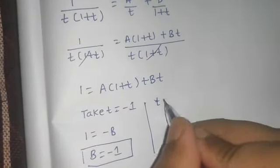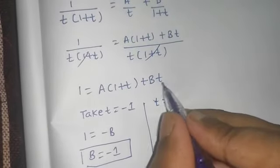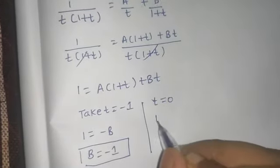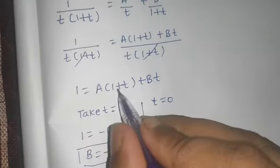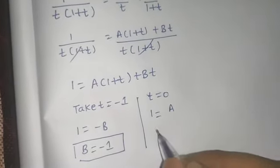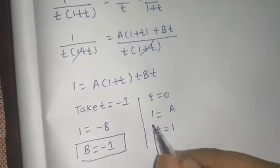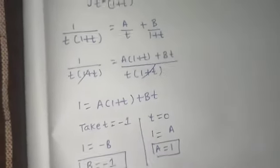Now if you take t as 0, this will become 0. So 1 equals A times 1 plus 0, which is simply A. A is 1. So A is 1 and B is minus 1.